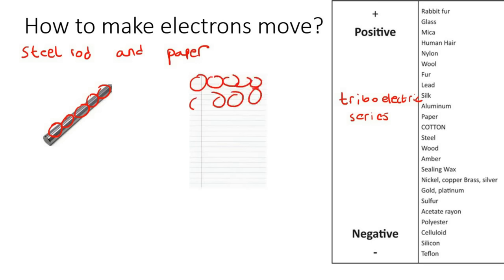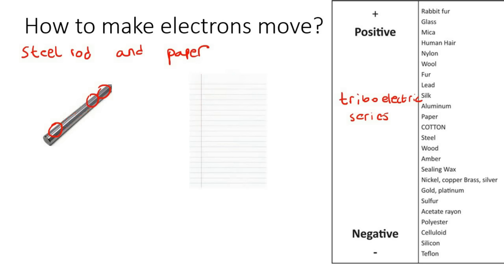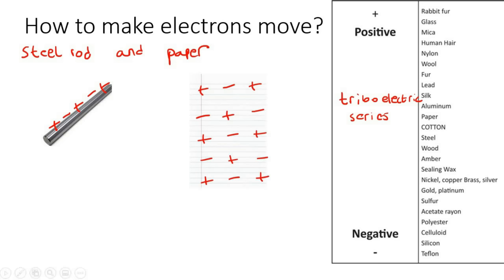So I'm going to put a whole bunch of positives and negatives on these materials to represent the atoms. Now we are going to take these two and rub them together, and electrons are going to move.